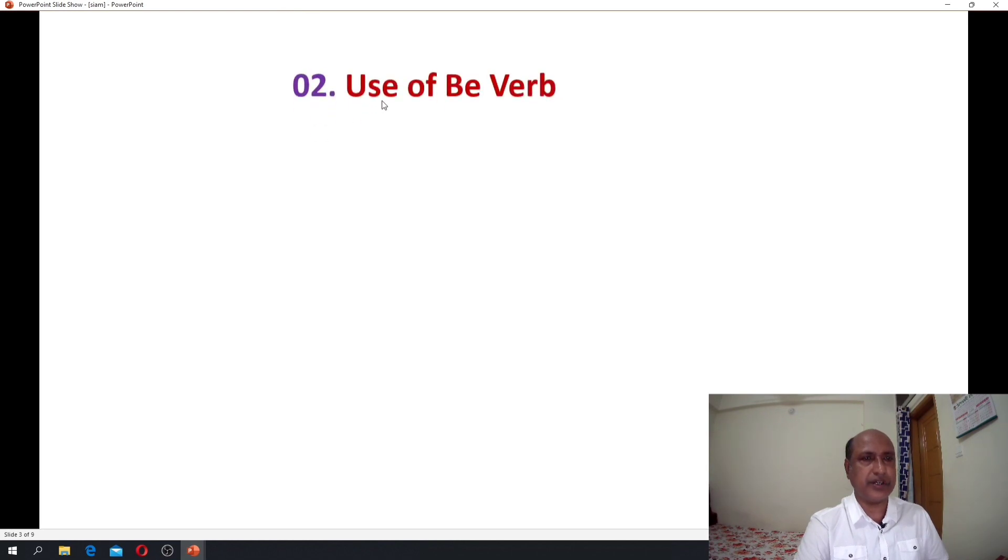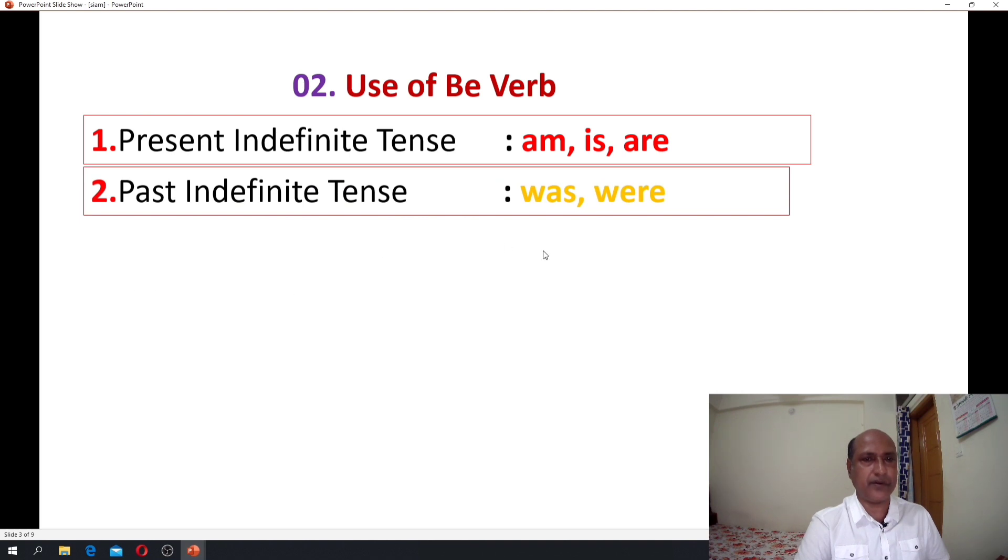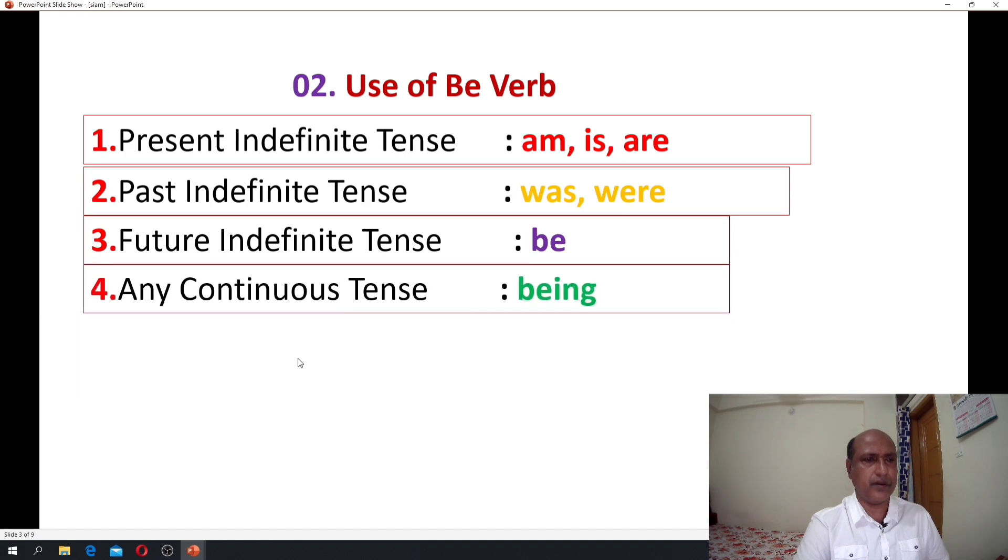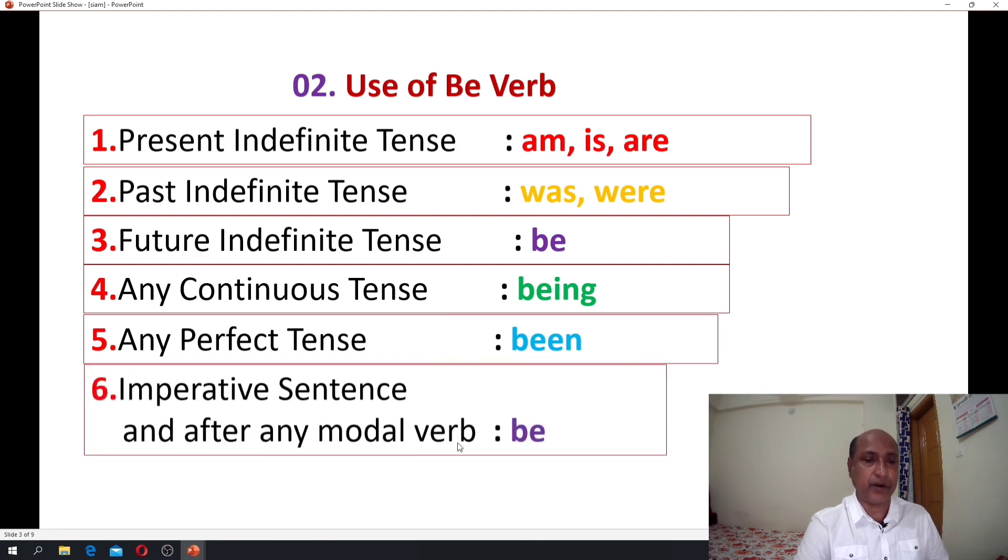Basic two: use of be verb. Let's see. Number one, for present indefinite be verb is am, is, are. For past indefinite was, were. For future indefinite be. For any continuous tense being. For any perfect tense been. For imperative sentence and after any modal verb, be verb will be be.